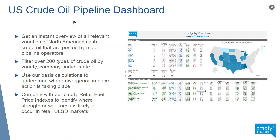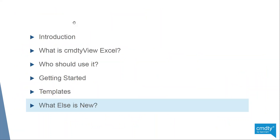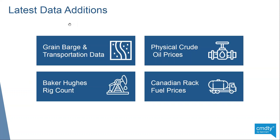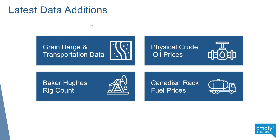A couple last things before we get into questions. We're always doing new stuff, always giving our clients more data and more tools. Latest data additions: we just onboarded grain barge and transportation data. We're pulling the U.S. Corps of Engineers data into our ecosystem — locks and dams information, which tells you the amount of grain at the commodity level, like corn and beans, that moves through a particular lock going down the Mississippi. If you combine that with our basis indexes and our yield estimates, you can really gain an unparalleled picture of what actual grain movement looks like throughout the United States.